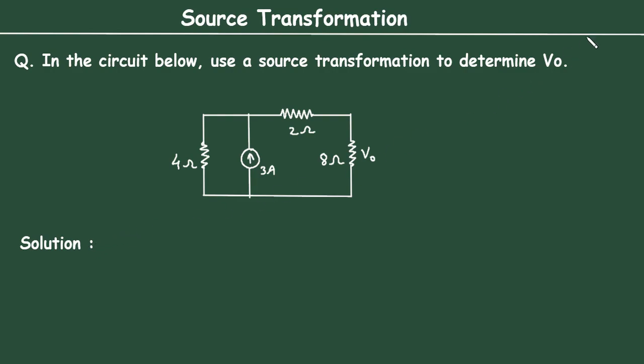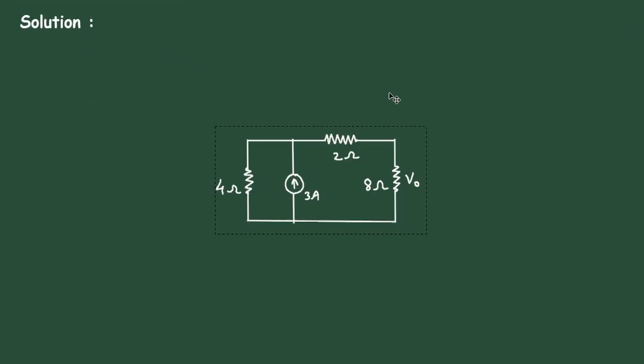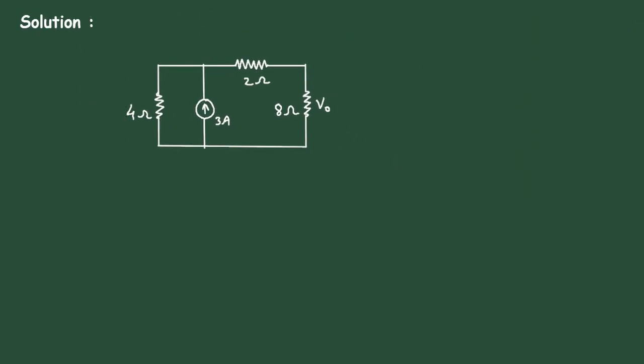Solution. First of all we will convert this current source into its equivalent voltage source. So step number 1 will be convert current source, 3 ampere current source to voltage source.